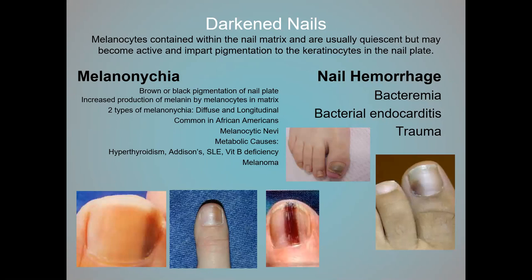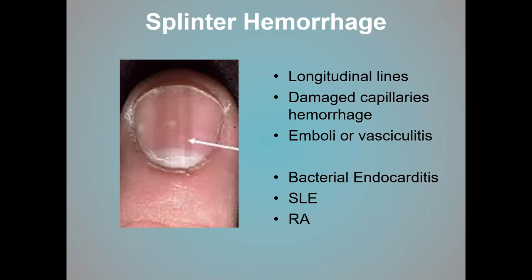Regarding dark nails: one thing we always look for and fear is the longitudinal darkened strip. It is very common for melanoma to show up in the toenails, and whenever we see a dark discoloration going longitudinally, it's a serious concern. It's not always melanoma — hemorrhaging can also cause it — but we always want to rule out melanoma. You can also see splinter hemorrhages — multiple long dark lines — which can be signs of rheumatoid arthritis, lupus, or bacterial endocarditis. These represent vascular changes within the nail bed.